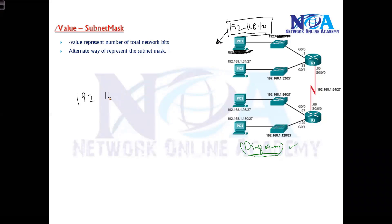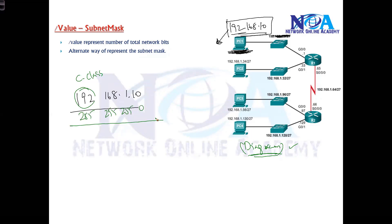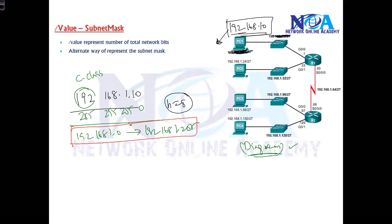Whenever I see an IP address like 192.168.1.10, based on what we learned, it is a C-class address. So I assume the default subnet mask is 255.255.255.0, which means there are eight host bits, and the size of the network is 256 addresses ranging from 192.168.1.0 to 192.168.1.255. I would assume all devices in this range belong to my network, but that may not be the case.